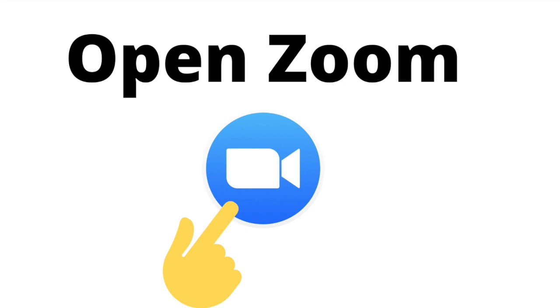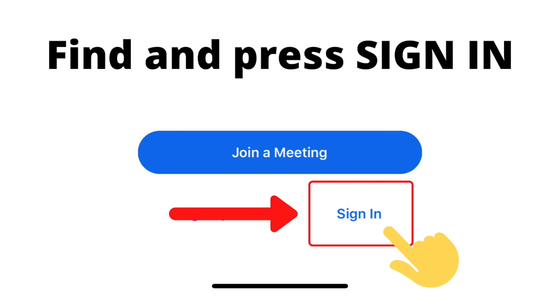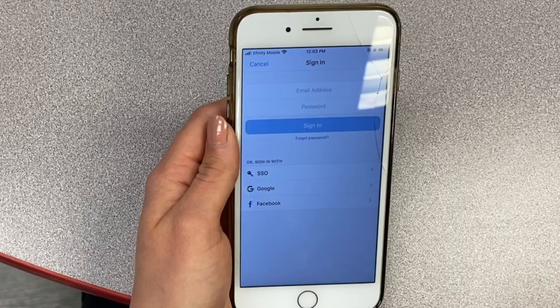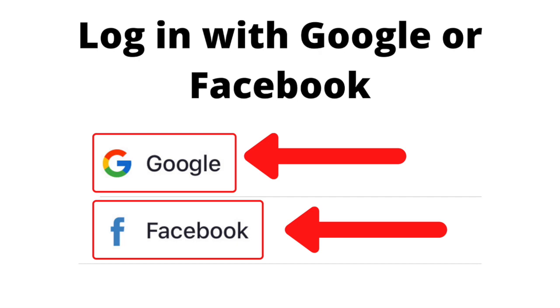Then open Zoom on your device. Press Sign In, located under the right side of the blue bar. From here, log in to your Google or Facebook account. Thank you.